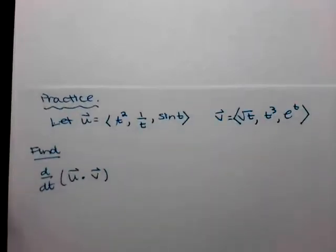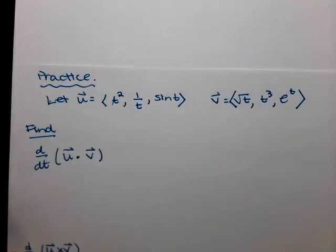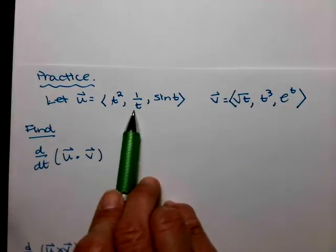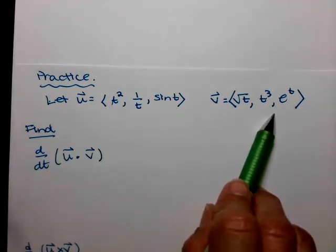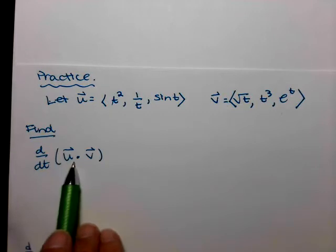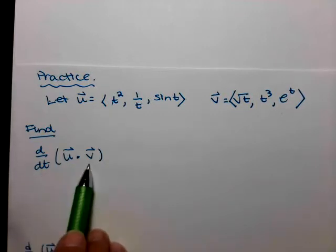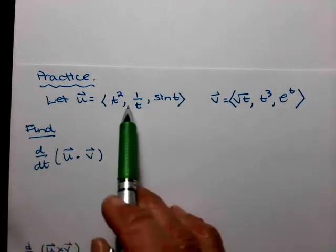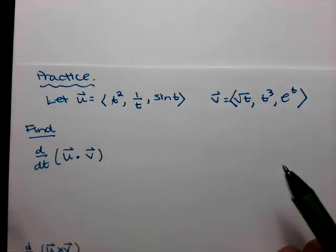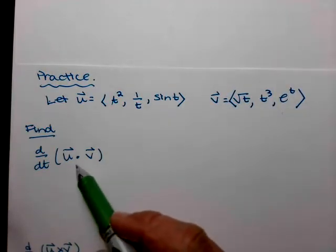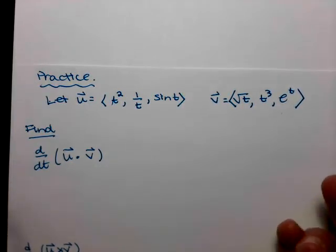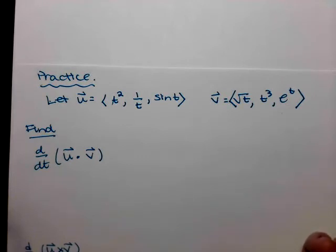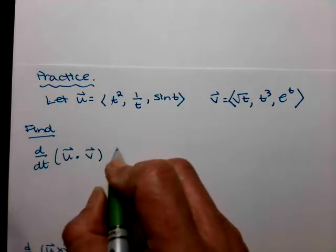Let's go ahead and practice. I have two vectors: u equals (t², 1/t, sin t) and v equals (√t, t³, eᵗ). Let's find the derivative of the dot product. You can do it both ways — compute the dot product first and then differentiate, or use u prime dot v plus v prime dot u. I'm going to go ahead and do the dot product first and then find its derivative.